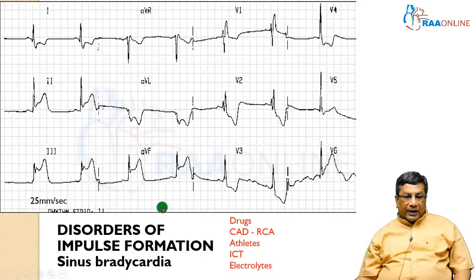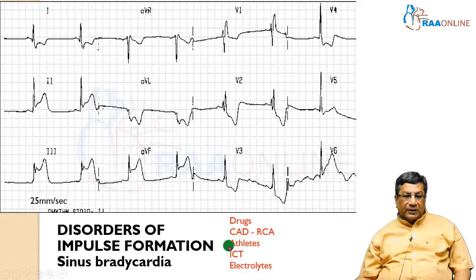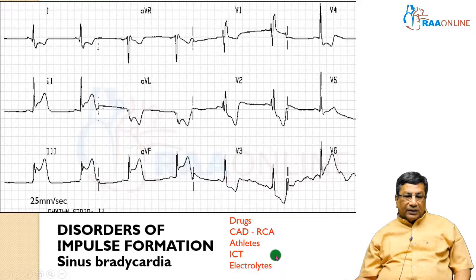The commonest cause of sinus bradycardia is drugs, like verapamil, diltiazem, beta blockers, or amiodarone. In acute right coronary lesions, you can have bradycardia because the right coronary artery supplies the AV node and the SA node in 60% of people. Athletes may have bradycardia. Increased intracranial tension can produce bradycardia. Electrolyte problems, especially hyperkalemia, can also produce bradycardia.